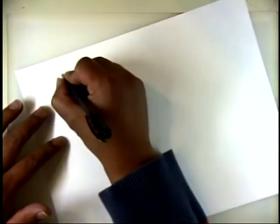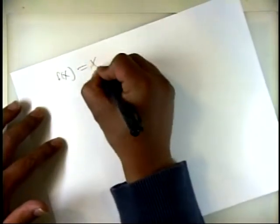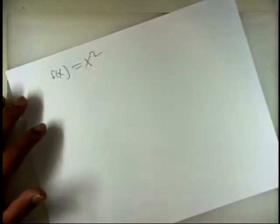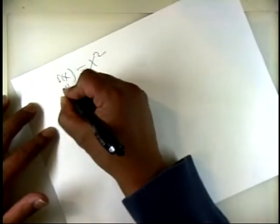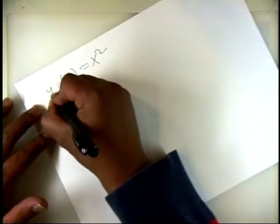Suppose we have f(x) equal to x squared. To plot this function in a graph, we think of this f(x) as y.